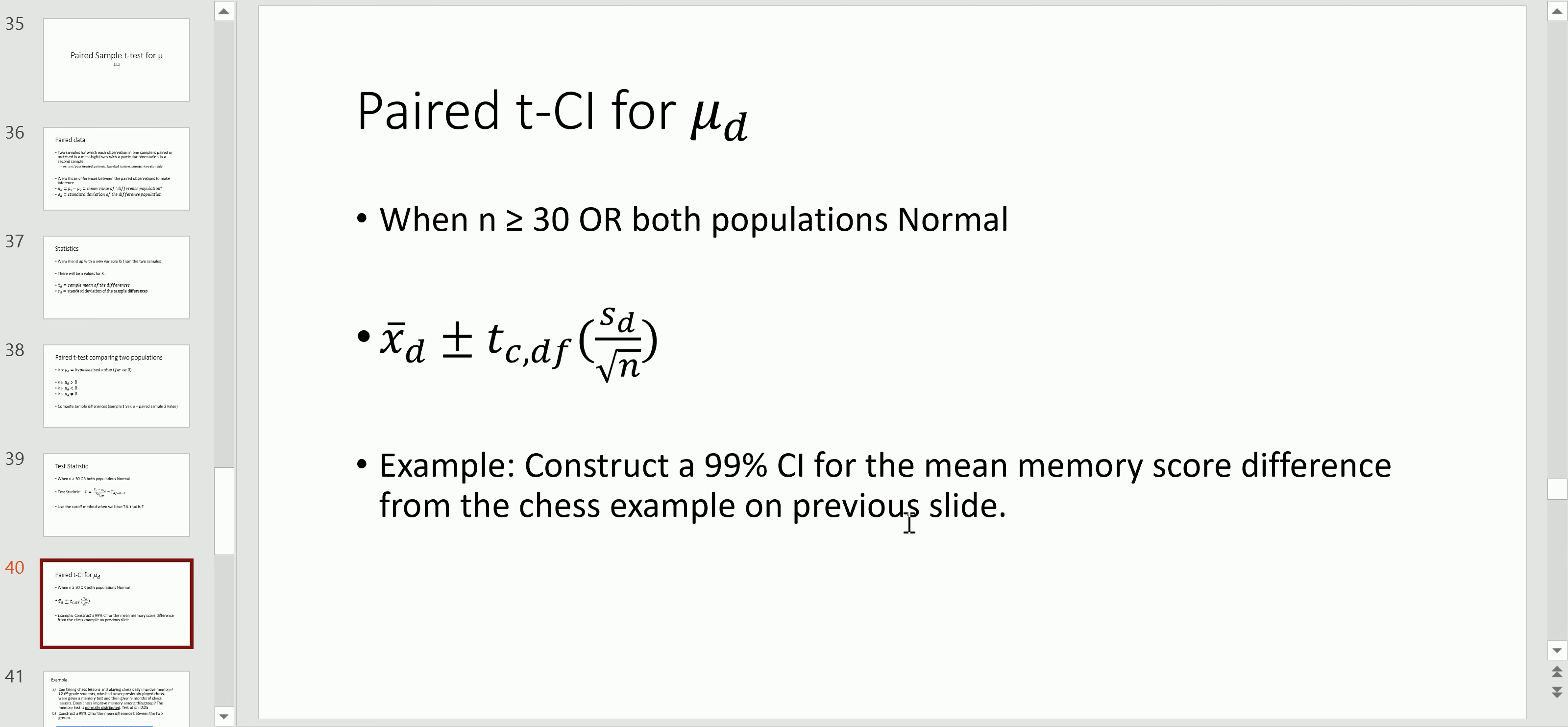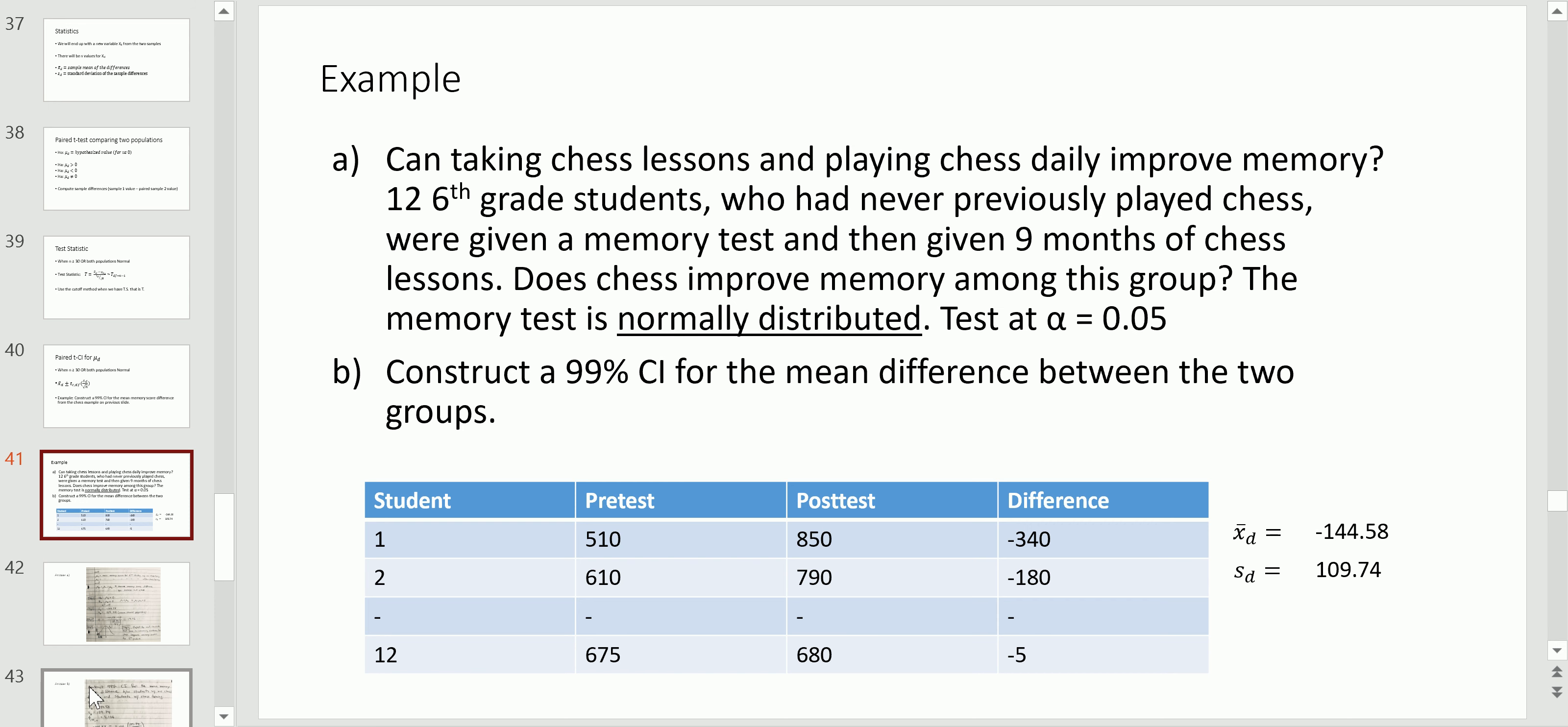Let's do an example of this. We're going to construct a 99 percent confidence interval for the mean score difference from chess example on a previous slide. Actually, that example is on the next slide. So take a look at this. Pause this. Work through this problem. Just take a couple. Let me make a couple notes here.